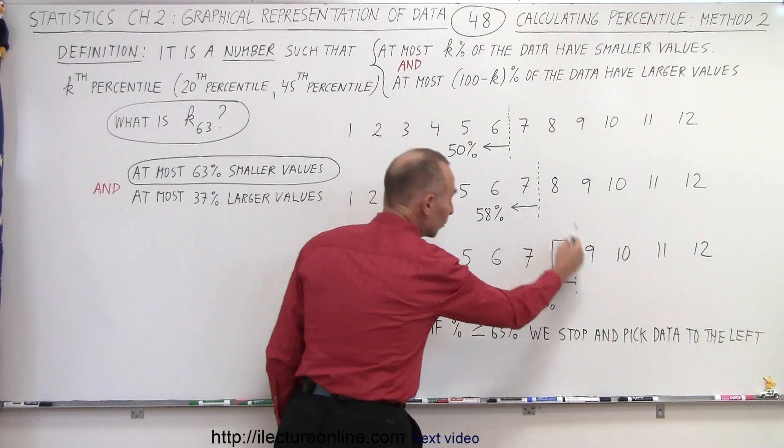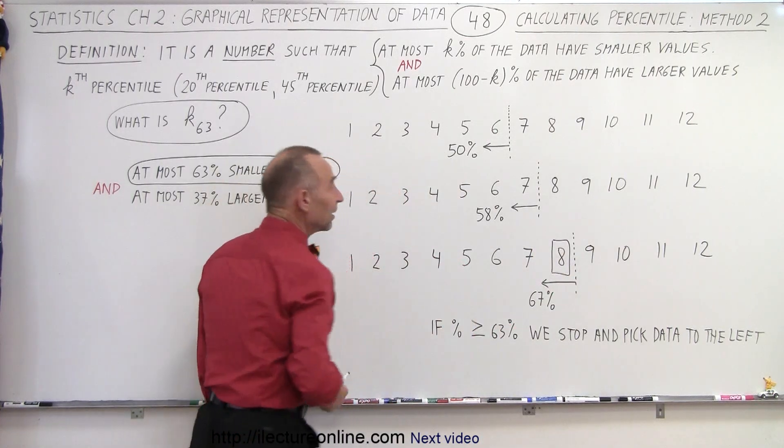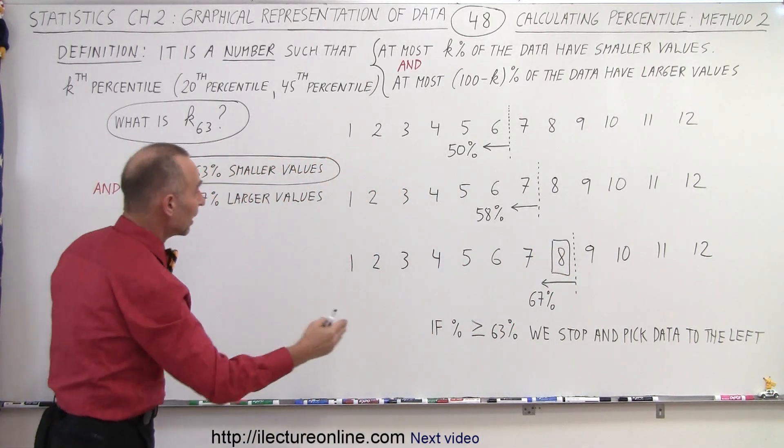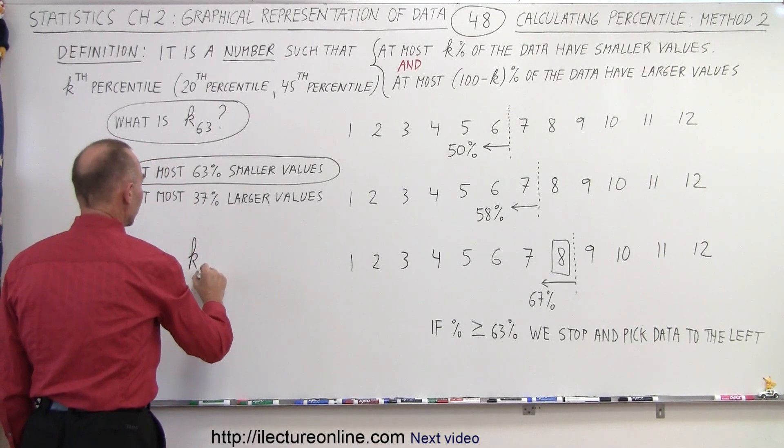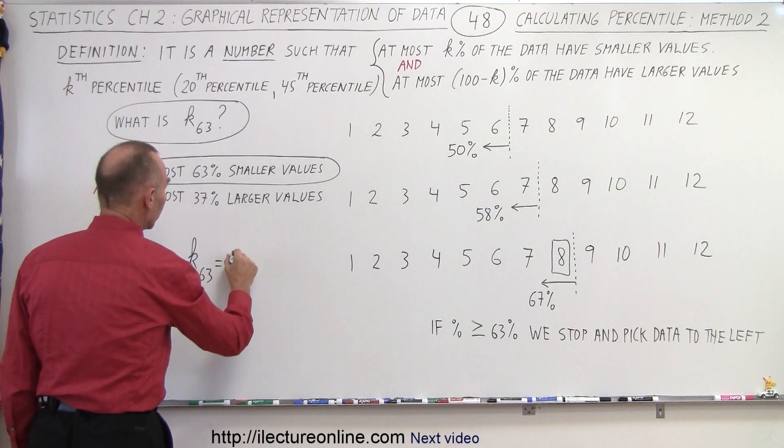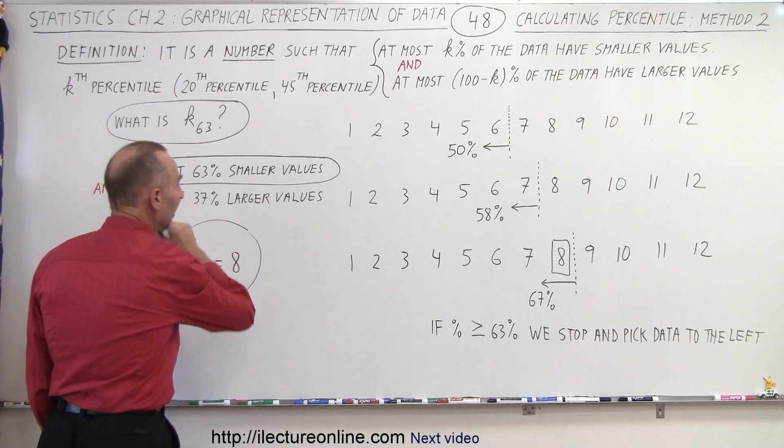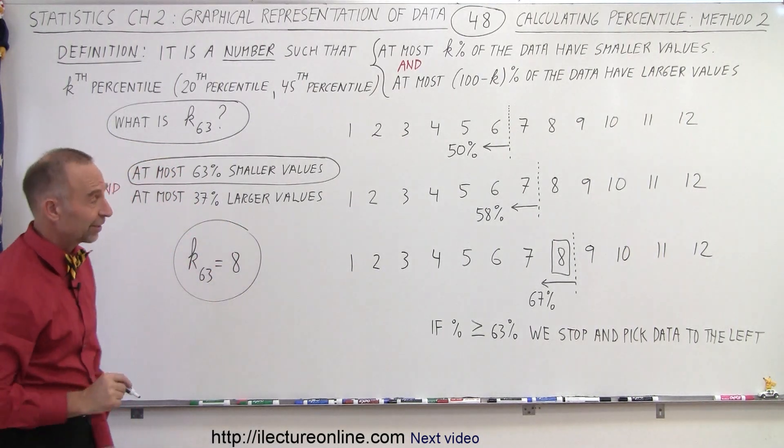Once we get to a boundary that's either 63 percent or greater than the upper limit for the data points to the left, we can say that the 63rd percentile is therefore equal to 8, and that is how it's done. Pretty slick, don't you think?